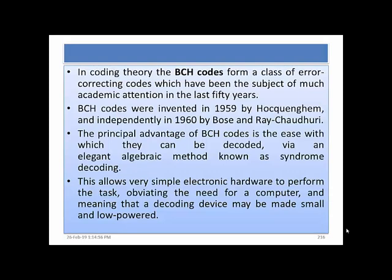In coding theory, the BCH codes form a class of error-correcting codes which have been the subject of much academic attention in the last 50 years. BCH codes were invented in 1959 by Hocquenghem and independently in 1960 by Bose and Ray-Chaudhuri. The principal advantage of BCH codes is the ease with which they can be decoded via an elegant algebraic method known as syndrome decoding.